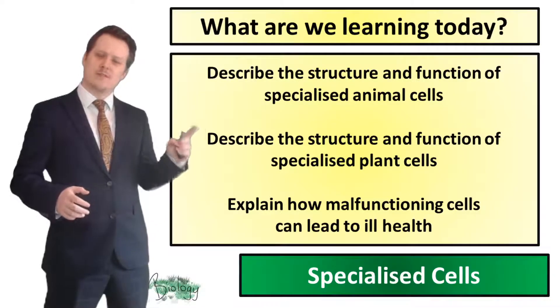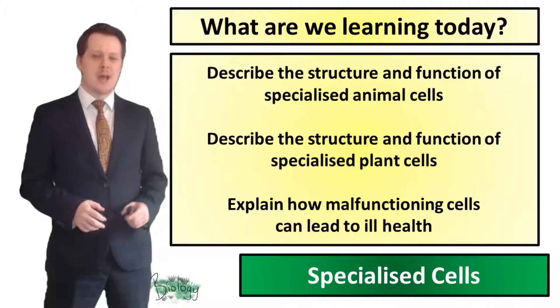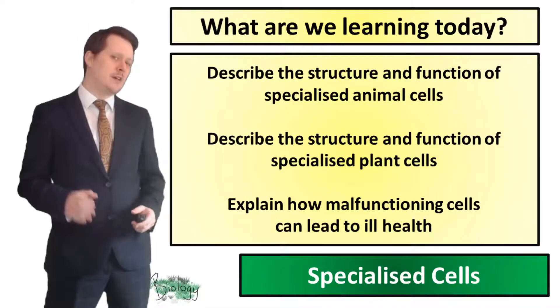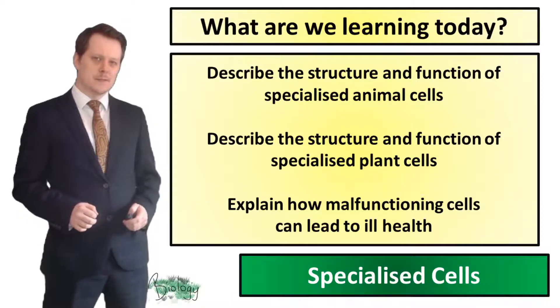Our objectives today are to describe the structure and function of some specialized animal cells, describe the structure and function of some specialized plant cells, and explain how when these cells begin to malfunction it can lead to ill health.